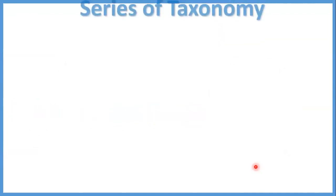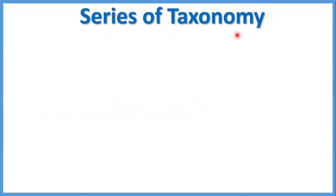في عندنا حاجة اسمها series of taxonomy. مثلا إحنا لما بيجي ندرس subject زي العربي — العربي دي الmain subject. لما بتيجي بتدخل جوه العربي بتلاقي فيها branches كتيرة زي القراءة والنصوص والنحو والبلاغة، وبعد كده كل فرع منهم بيتقسم لbranches تانية. ده بالظبط اللي بيحصل في series of taxonomy.